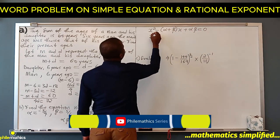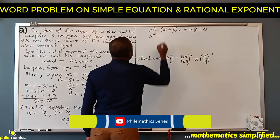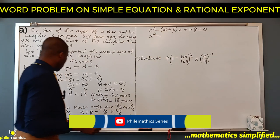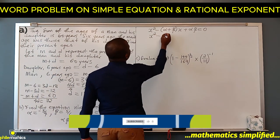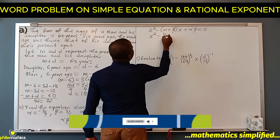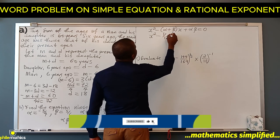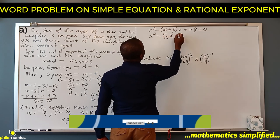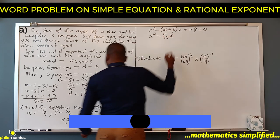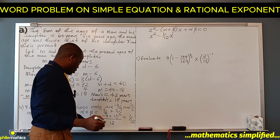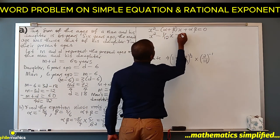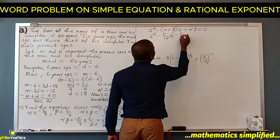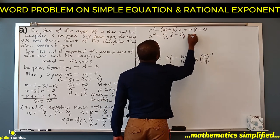The sum of the roots is 1 over 12, so we have x squared minus 1 over 12 times x plus the product minus 5 over 8 equals 0. This is the quadratic equation whose roots are minus 3 over 4 and 5 over 6.